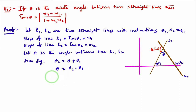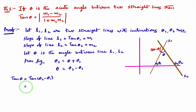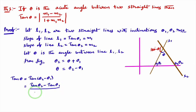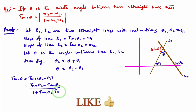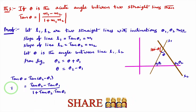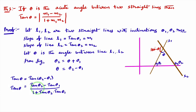I will apply tan to both sides of this relation. So tan theta equals tan of theta2 minus theta1. The right-hand side is of the form tan(A minus B). Using the trigonometric formula, tan(A minus B) equals tan A minus tan B divided by 1 plus tan A times tan B. Here A is theta2 and B is theta1, so tan theta equals tan theta2 minus tan theta1 divided by 1 plus tan theta2 into tan theta1.